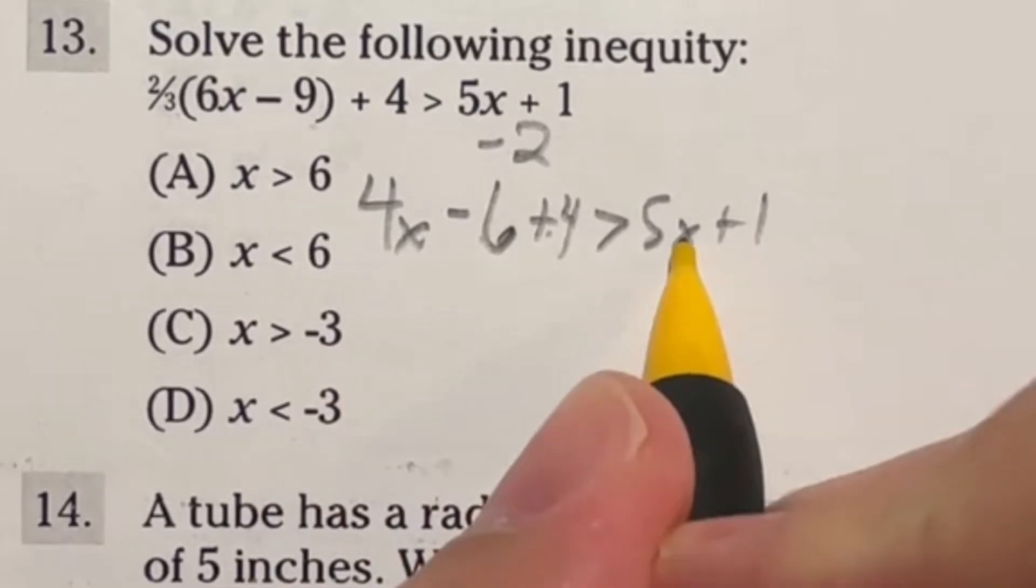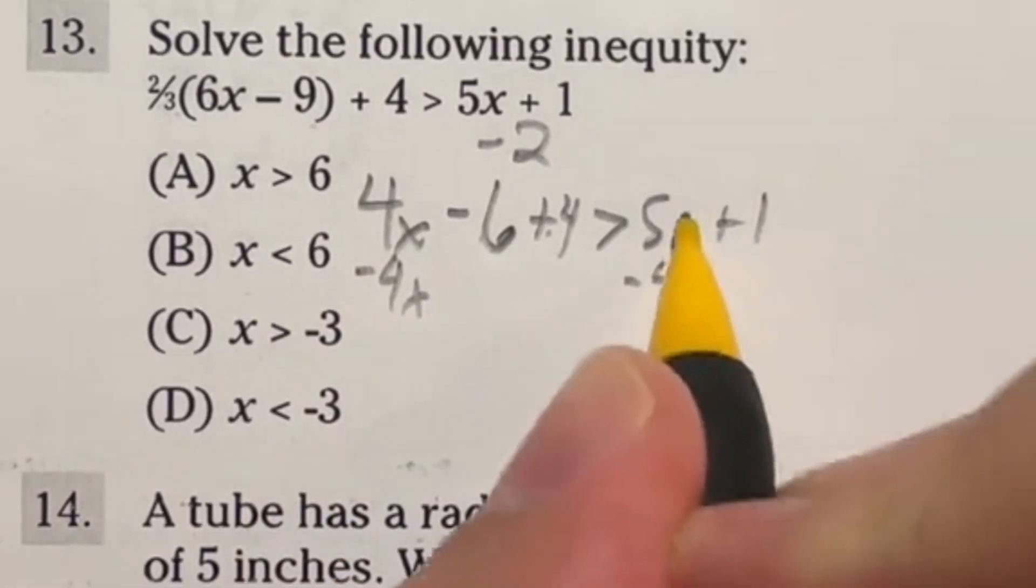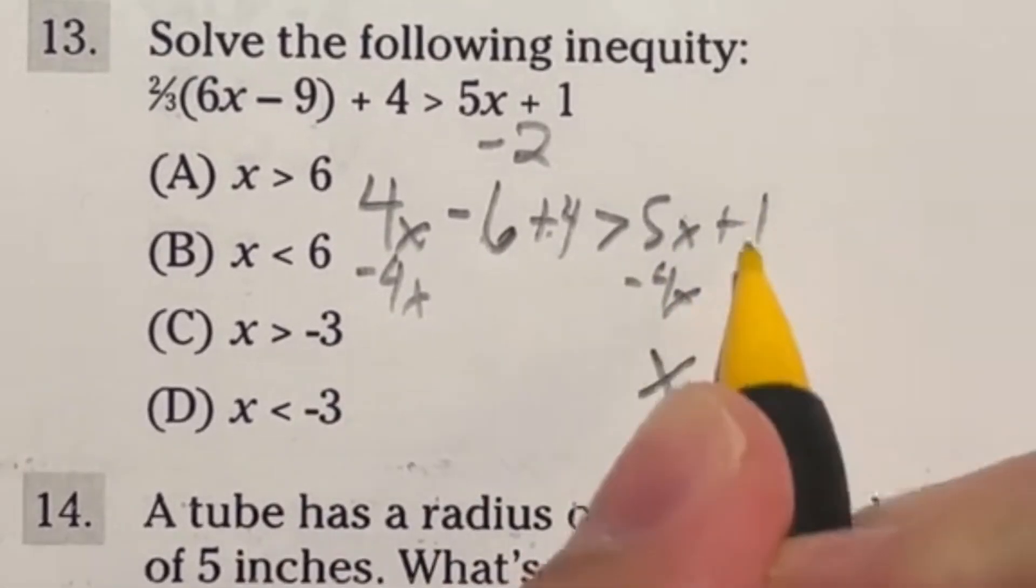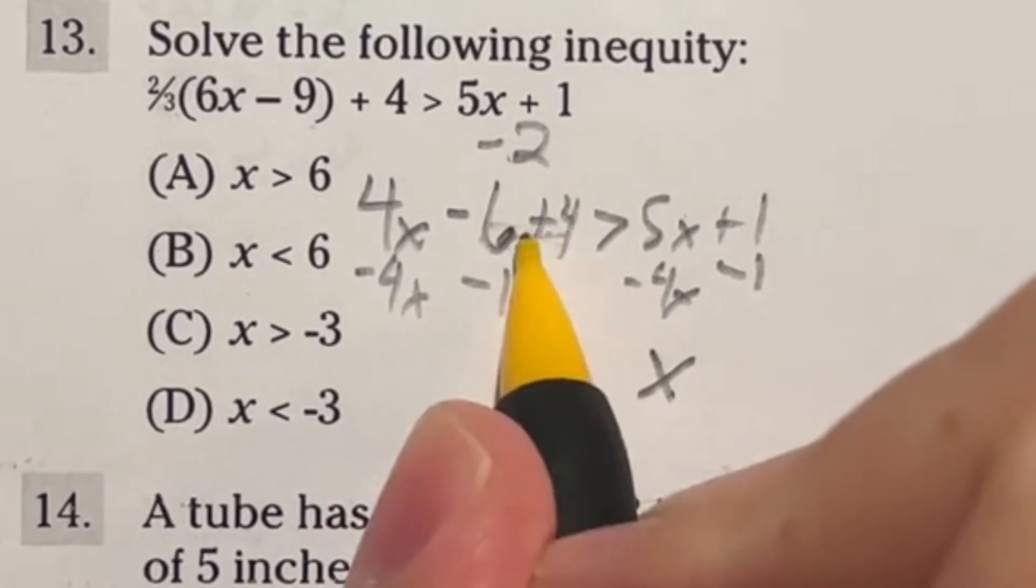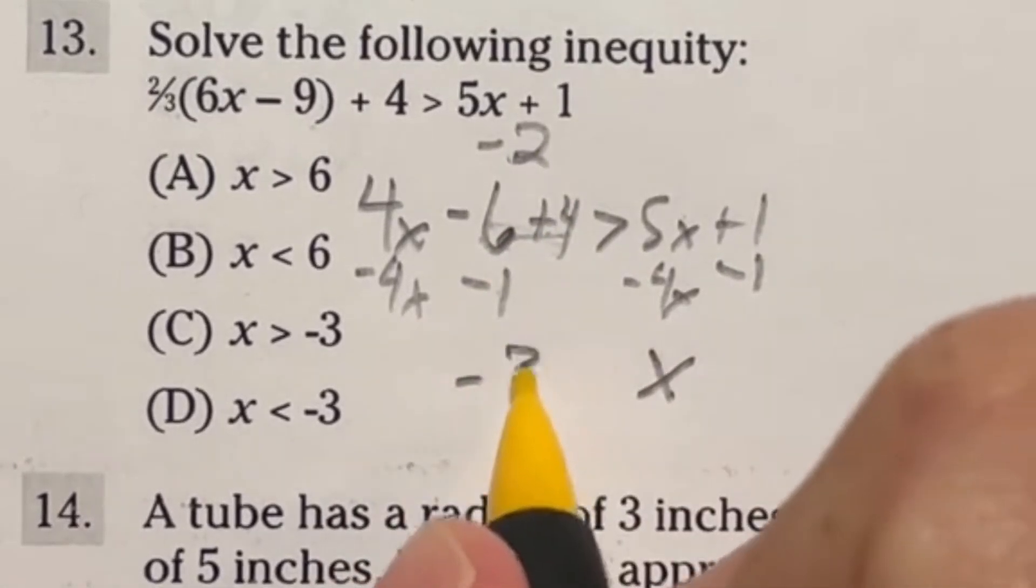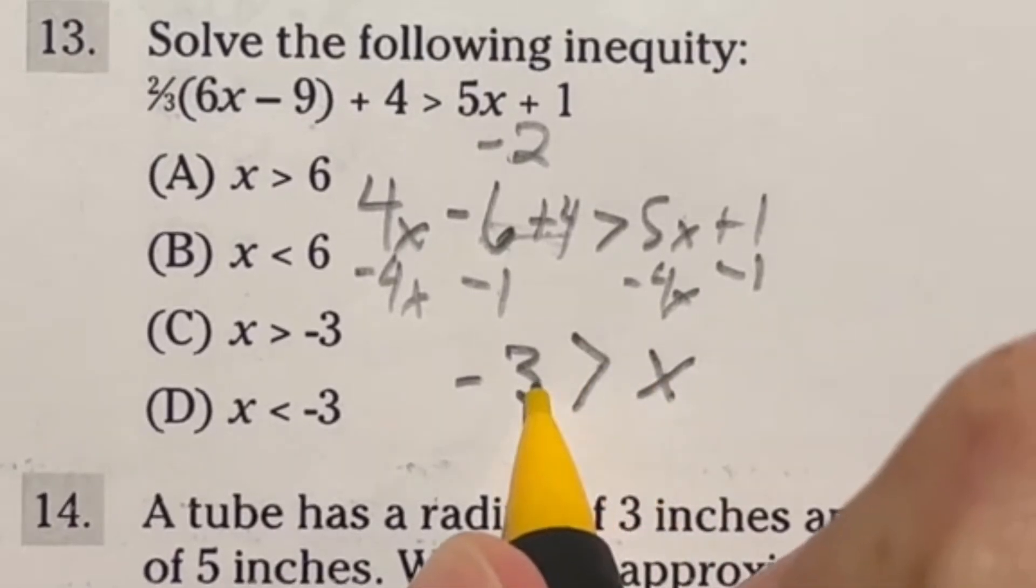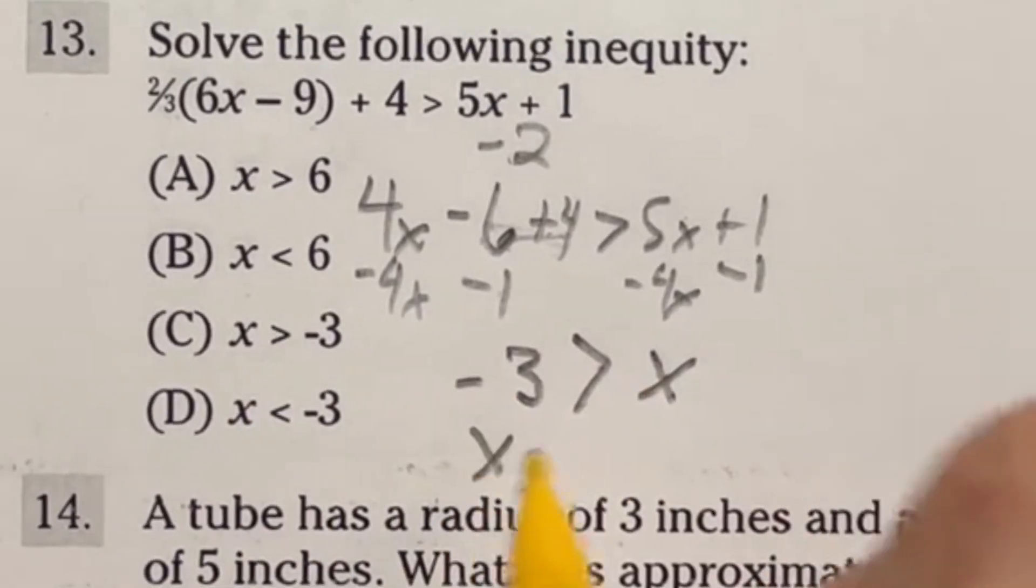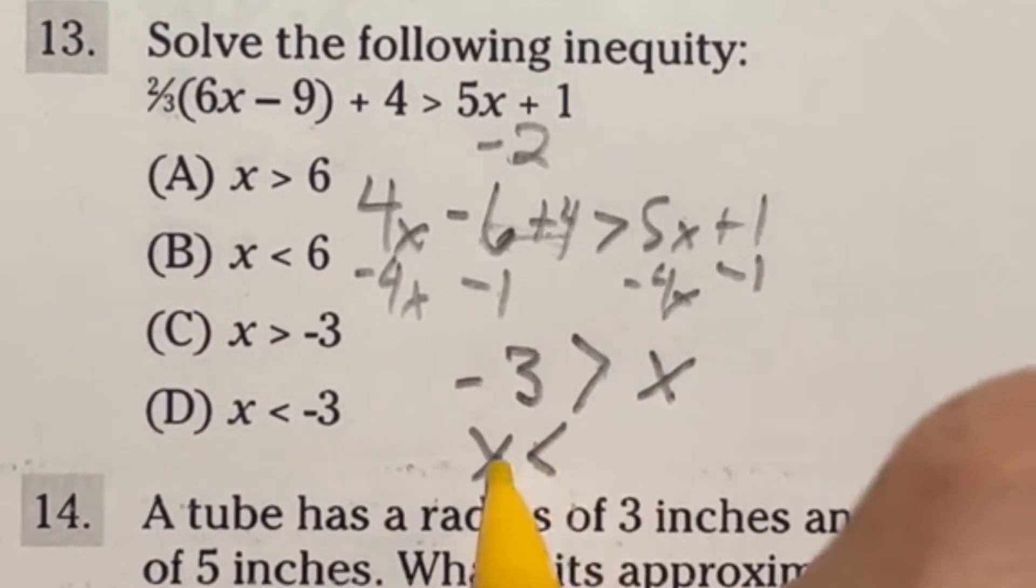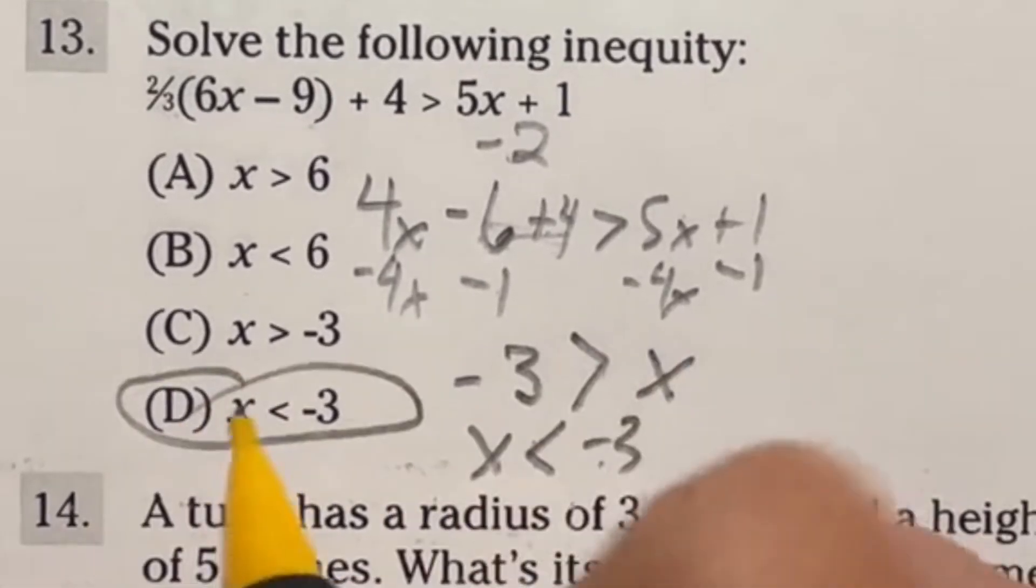So subtract x to this side, subtract 4x from both sides. That gives me 5x minus is just x. And I'm going to subtract the one from both sides as well. So we have this negative two from combining those two minus this will be negative three. So we end up having that x is less than negative three. Now be careful because the x is on the left hand side over here, so you kind of got to flip the whole thing, but still make the point face towards the x. So this is our final answer, which means we're looking at D.